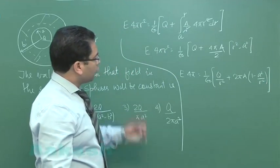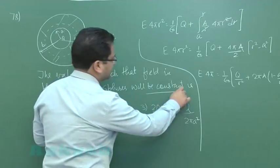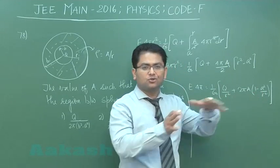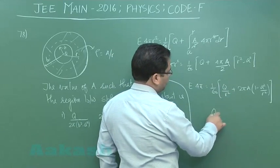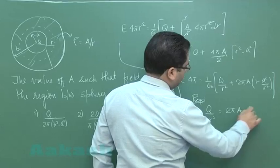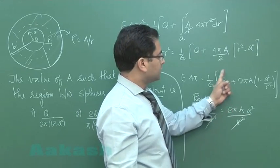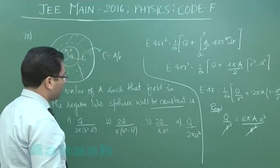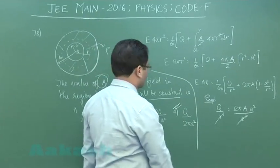We want the electric field to be independent of small r, so it must be constant. There are two terms involving r: q/r² and the term with a²/r². For the field to be constant, these r-dependent terms must cancel. This requires q/r² to equal 2πα·(a²/r²), so that r² cancels on both sides. Therefore, the value of α is q divided by 2πa², making the fourth option correct for question 78.